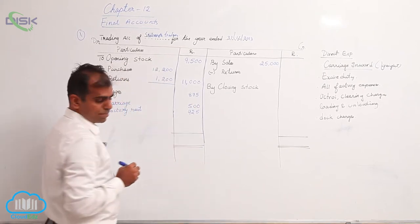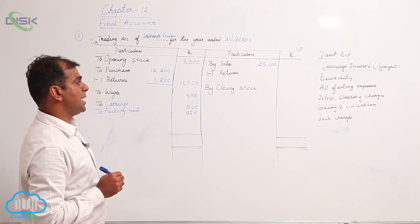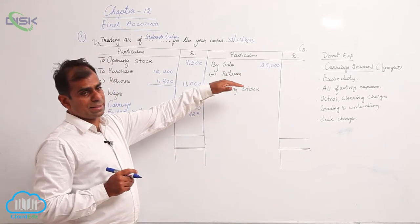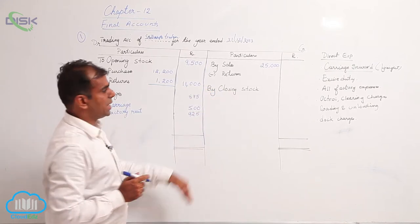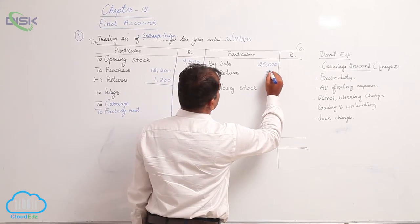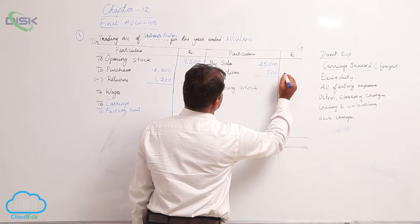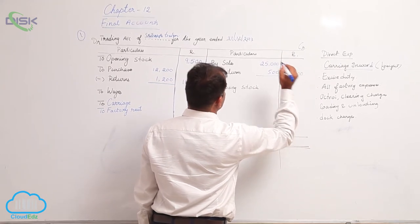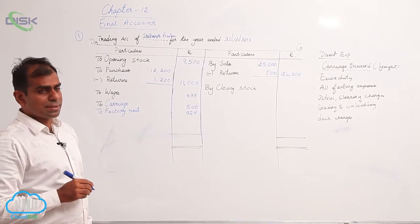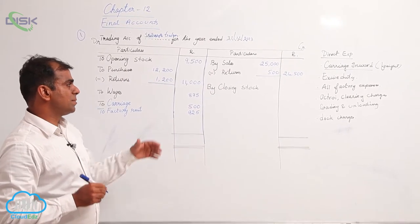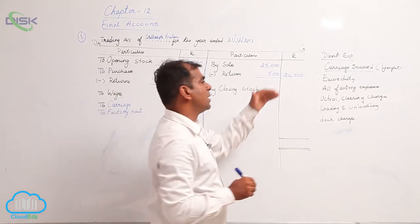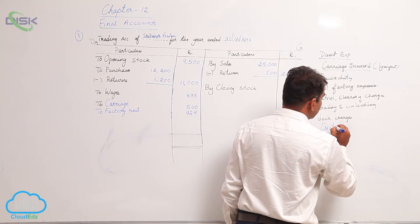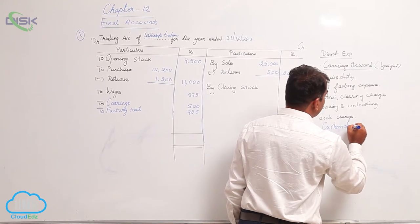The next item is your sales returns, so from sales we should minus sales returns. So sales returns being 500 I am going to deduct from sales which is going to become 24,500. Now next item is customs duty. So customs duty is example of your direct expense. I am adding here to the list custom duty and also I am writing it on the debit side because it is the expense what you pay to get your goods cleared from your custom authorities. So customs duty the amount being 800.